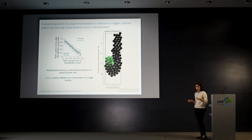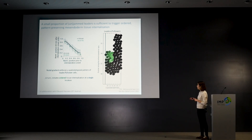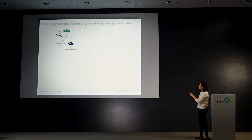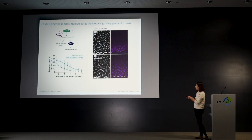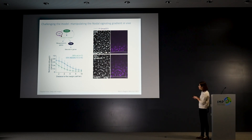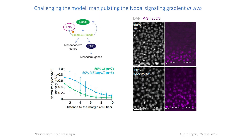We were interested in manipulating the shape of the nodal signaling gradient in vivo. For that we turned to maternal zygotic mutants for Lefty, which is the inhibitor of nodal signaling. It was previously described — and we observed the same — that in lefty mutants the gradient of nodal signaling is expanded.